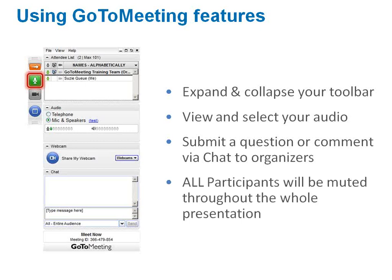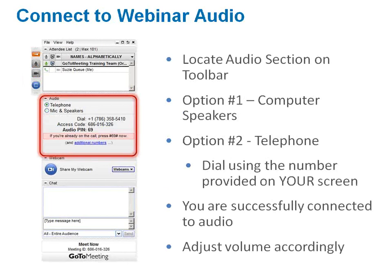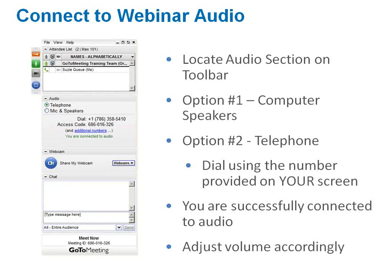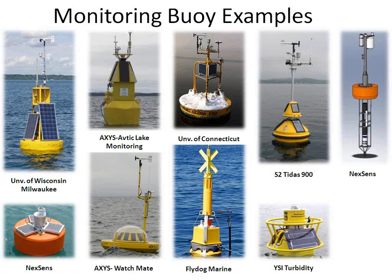Everyone should be on mute. For the audio, here's the audio section of the toolbar. You have two options: one to use your computer speakers, and the other is to use the telephone. If you want to use the telephone, you should dial in using the number on your screen, then the PIN on your screen, and then you should be connected. You can adjust the volume.